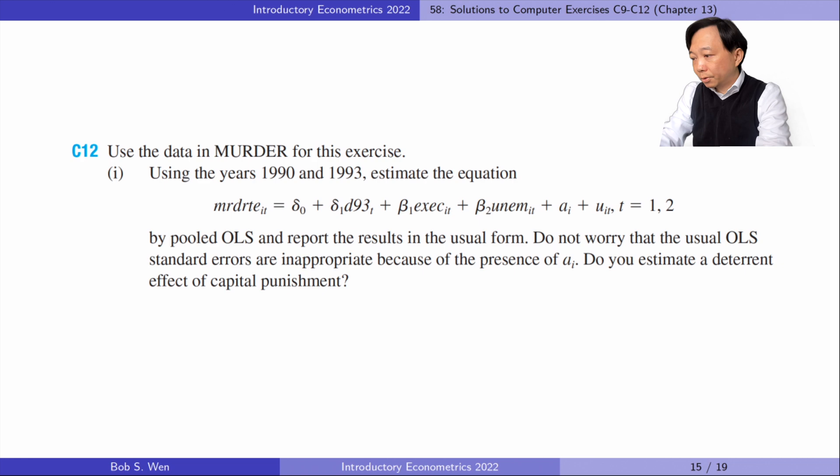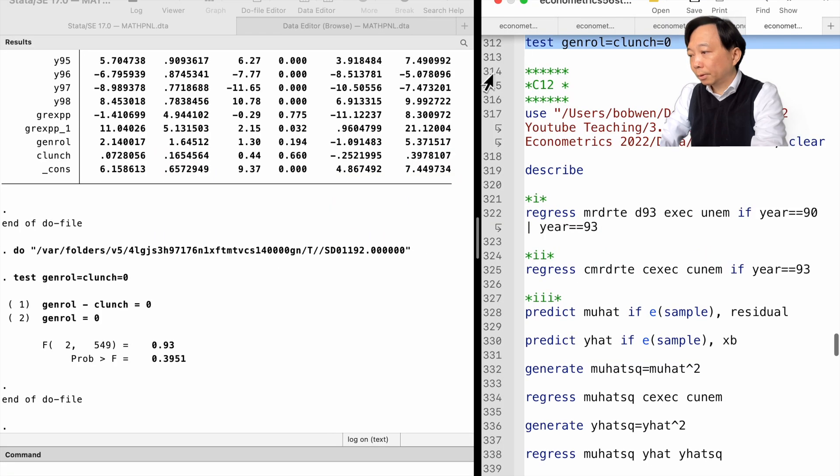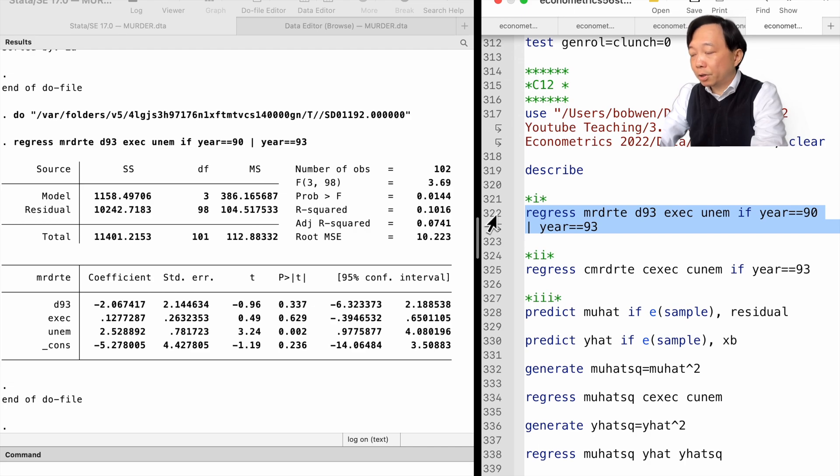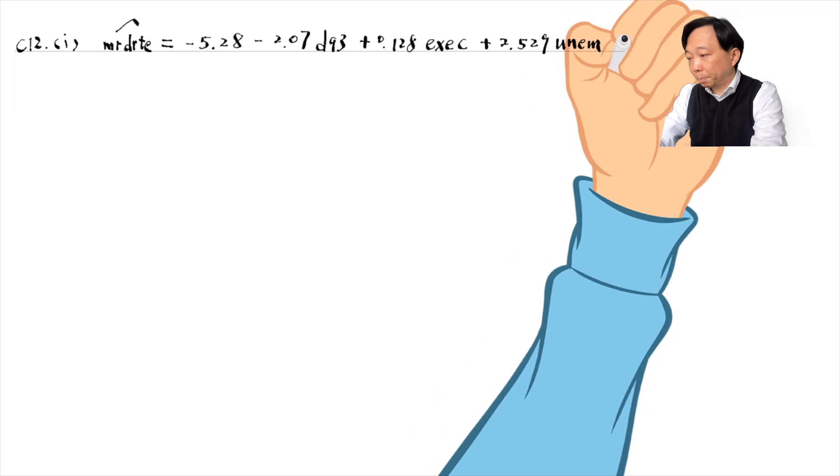Let's go to computer exercise 12. In part 1, we use the years 1990 and 1993 to estimate the equation by pooled OLS and report the results in the usual form. Do not worry that the usual OLS standard errors are inappropriate because of the presence of unobserved state-specific factors. Do you estimate a deterrent effect of capital punishment? The estimated equation is as follows. We could not find a deterrent effect of capital punishment because the coefficient on execution is positive.